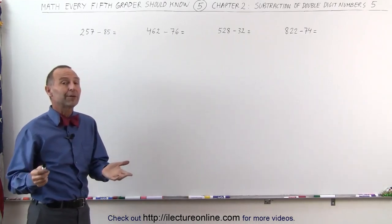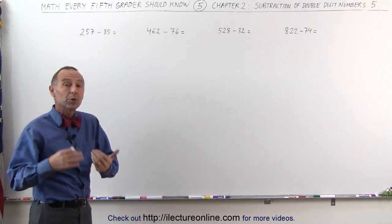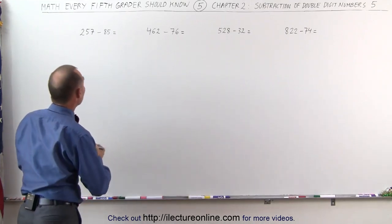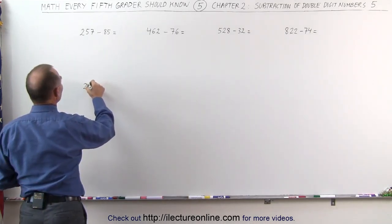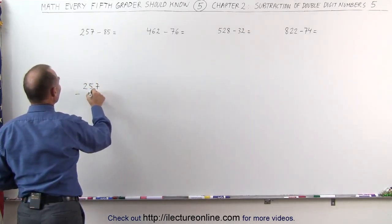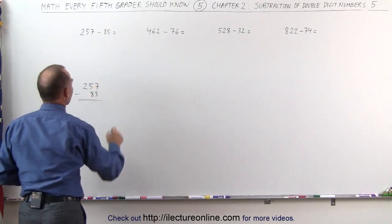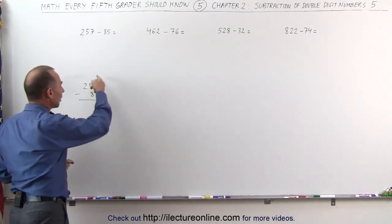Before we do that however, let's take a look and see how we normally would do that, writing it down on a piece of paper, longhand. We would write it like this, we would take the number 257 and subtract 85 from that. The way you do that is you go to the last numbers.